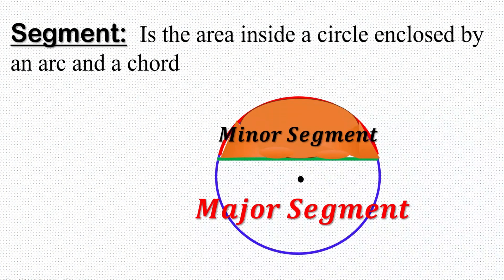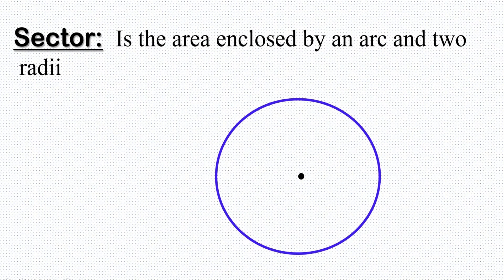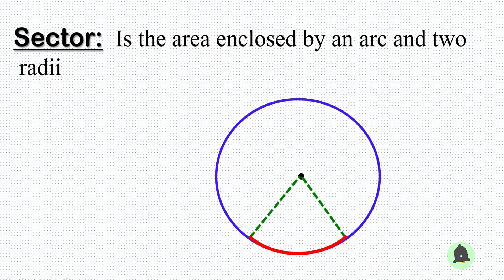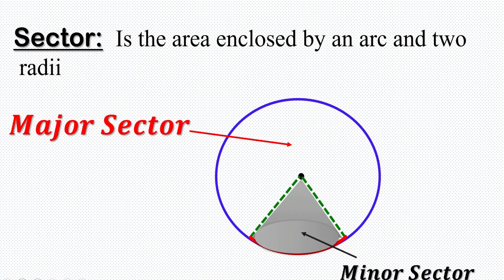The next part of the circle is sector. When we talk of a sector, we are talking about the area enclosed by an arc and two radii. So we have an arc, and the arc comes along with two radii. The area formed by the arc and the two radii is the sector. The smallest part is termed the minor sector, and the bigger part becomes the major sector.